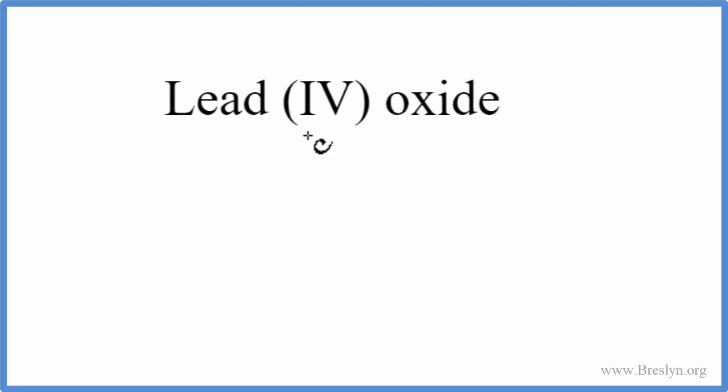To write the formula for lead oxide, we go to the periodic table and we look up lead, and that has an element symbol of Pb. We then look up oxide. We're looking for oxygen. That's O.